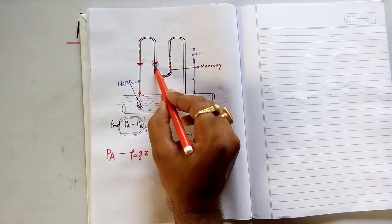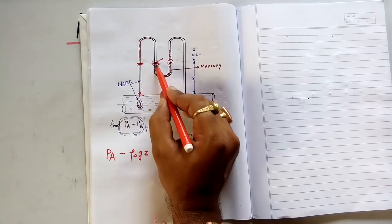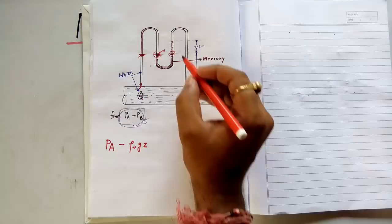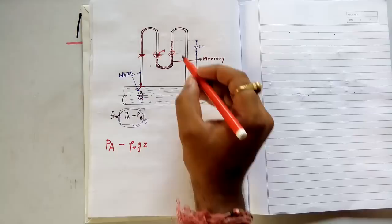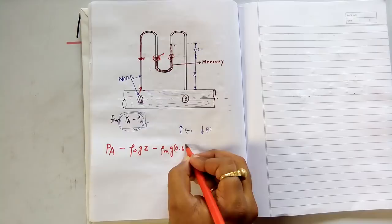I can directly jump from one point to another. Now I am at the bottom of the mercury column. I don't need to consider the pressure all over the horizontal section because I can jump directly. Now I will move again gradually upwards, and since I am moving upward, it is again negative. The height of this mercury column is 0.6, so it is rho_mercury times G times 0.6.